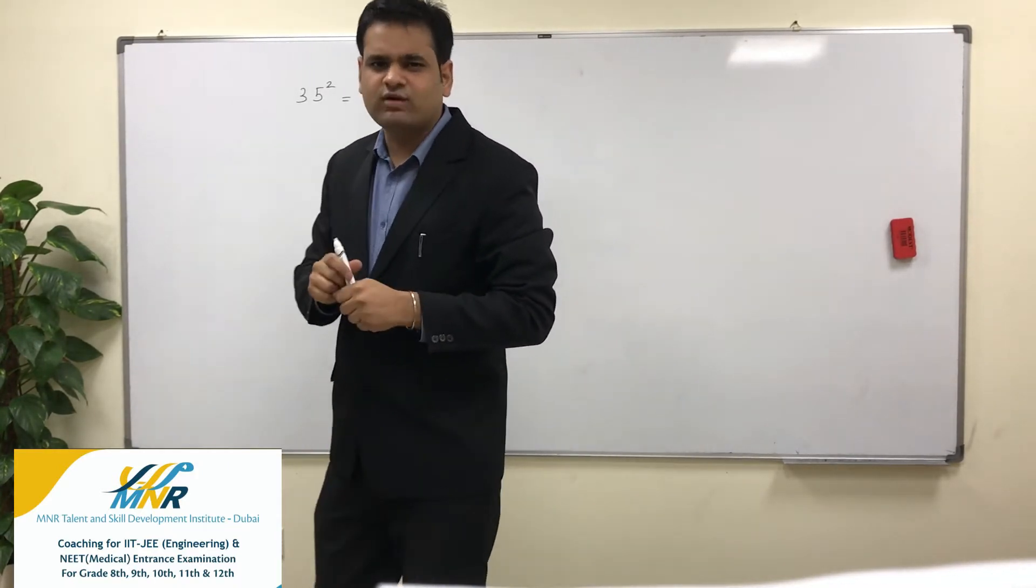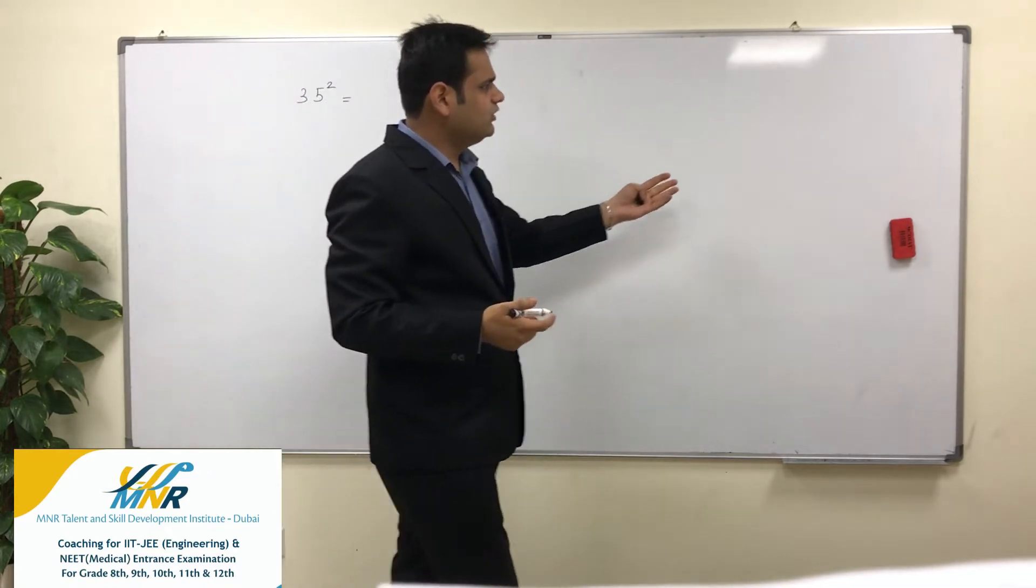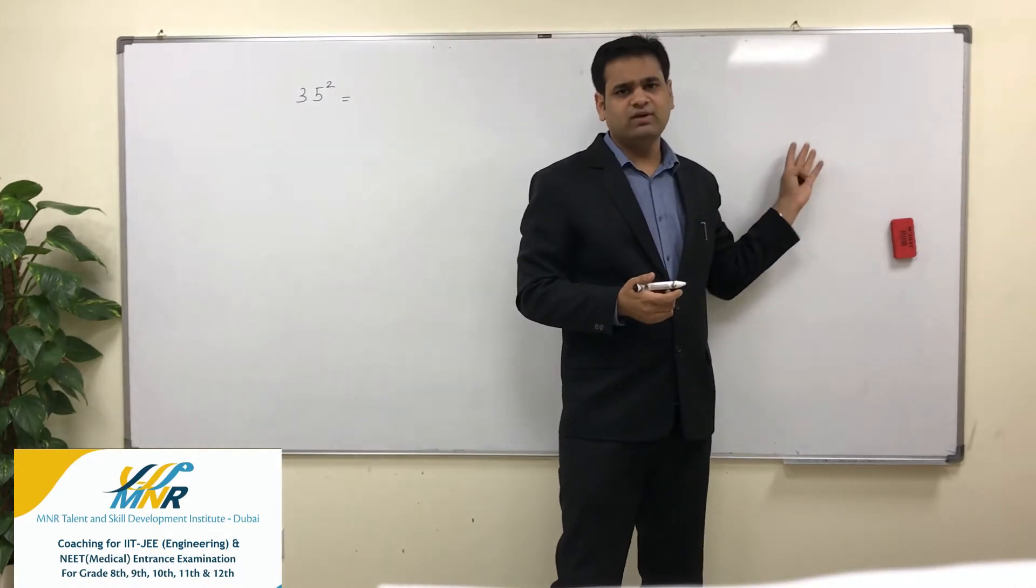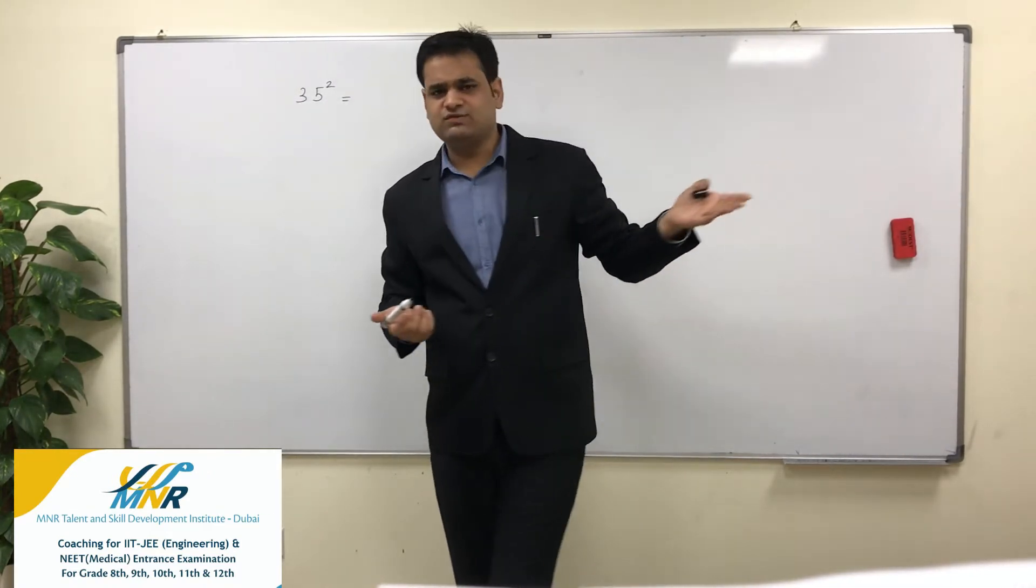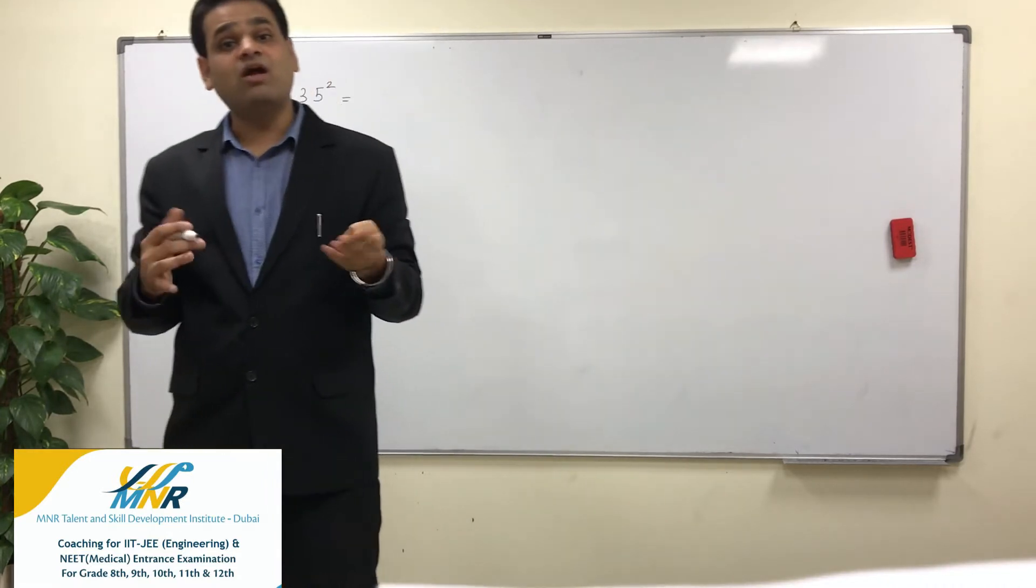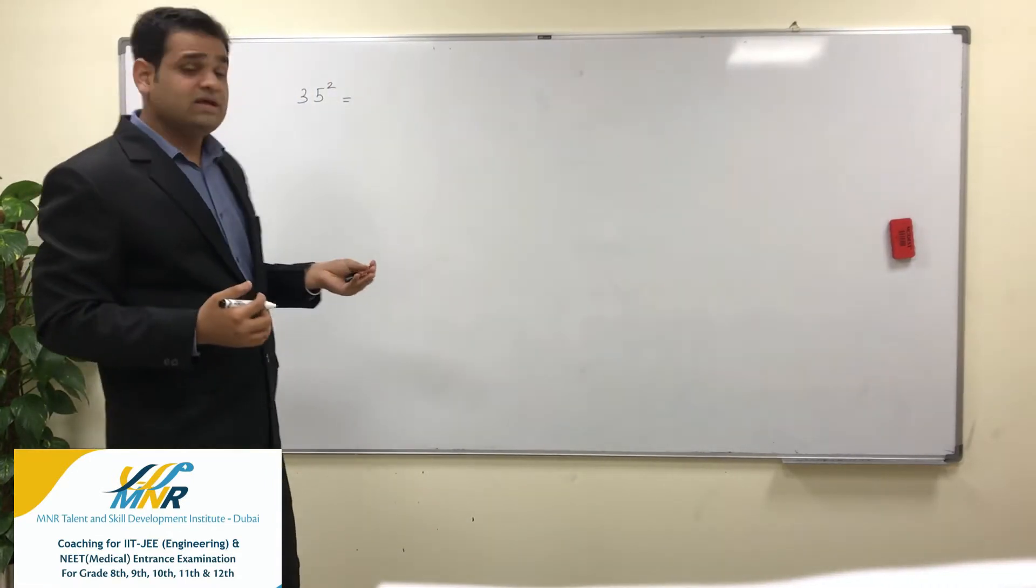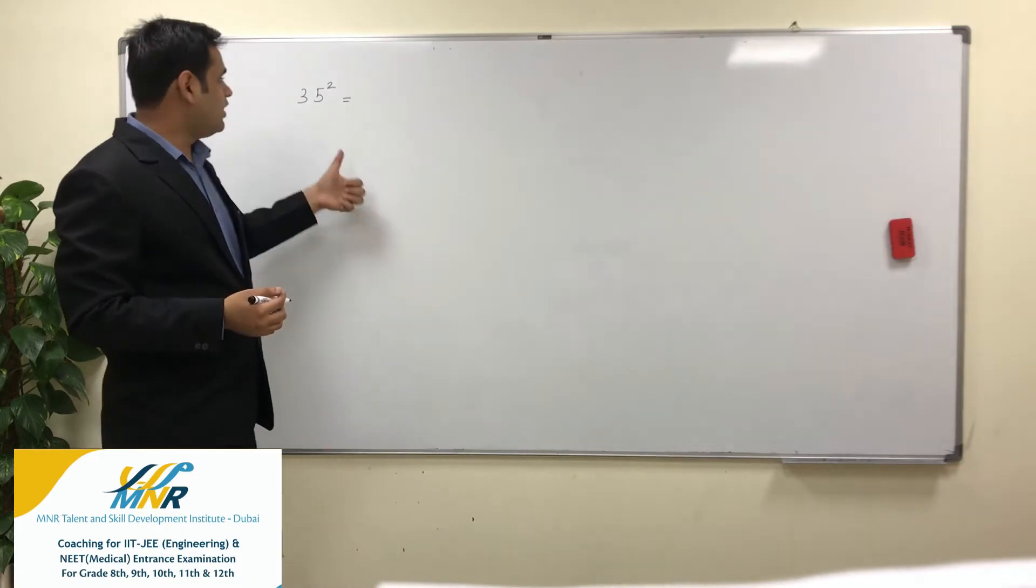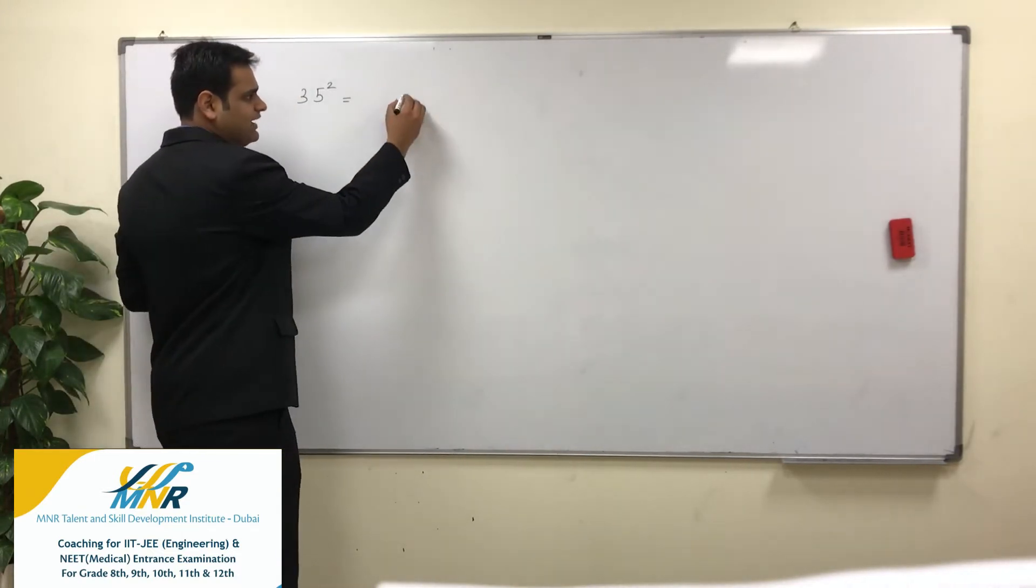If I find 35 square, what is the best way of doing it? Generally students do 35 into 35, then they do the normal multiplication which we learned in 5th or 6th grade, but it takes a lot of time. How can we do it in just two seconds?